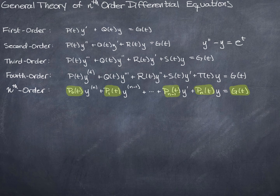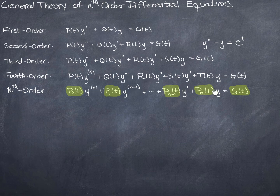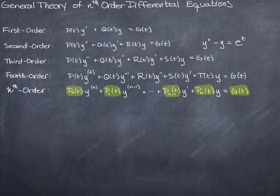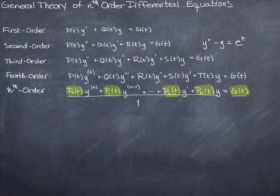So all I'm doing is generalizing the pattern we see here, using subscripts on the function name p because I don't know how many letters I'm going to need. The convention your textbook uses is that while the derivatives start at n and go down, the subscripts start at zero and go up to n. We could call these functions anything we wanted, but this keeps us all on the same page. I can divide both sides by p₀(t).